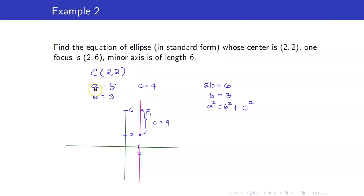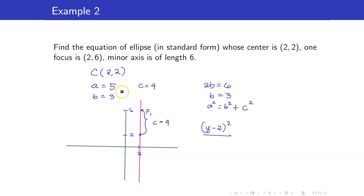We can now get the equation of our ellipse. Since the major axis is a vertical line, a goes with the variable y. So the equation is: (y − 2)² / a² + (x − 2)² / b² = 1, which is (y − 2)² / 25 + (x − 2)² / 9 = 1.